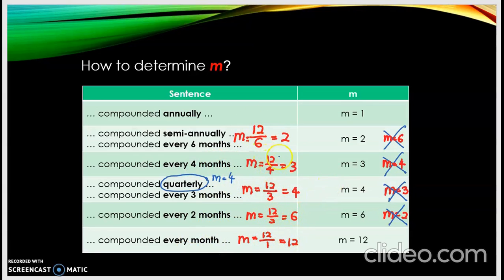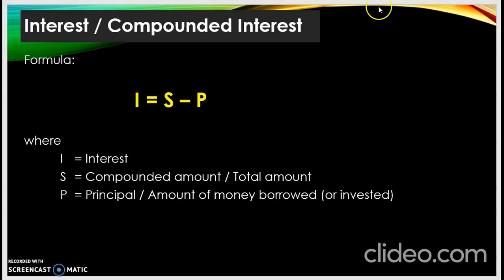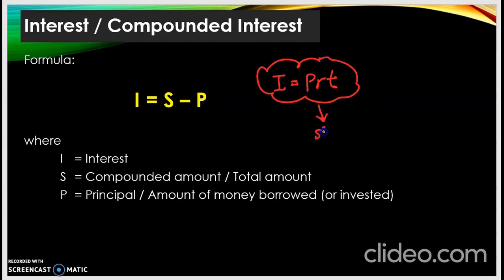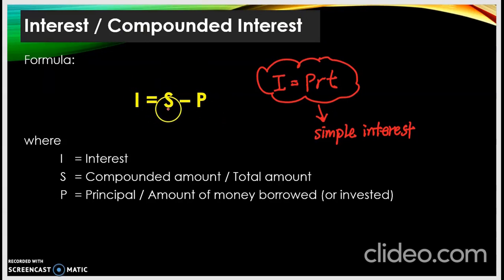Now we look at the interest formula for compounded interest. The formula is: I is equal to S minus P. Where I is the interest, S is the compounded amount or total amount, and P is the principal or amount of money borrowed or invested. Do not use I equals P times R times T — that is for simple interest, not for compounded interest.